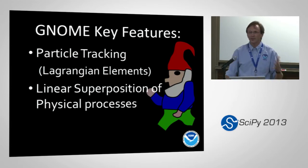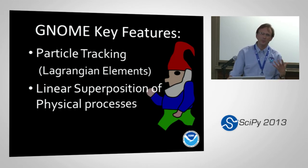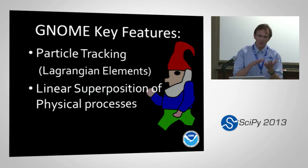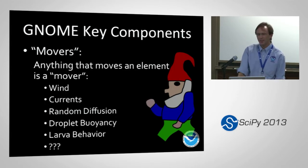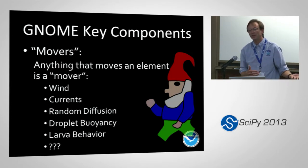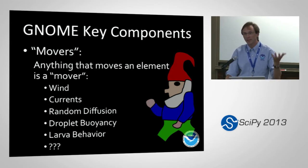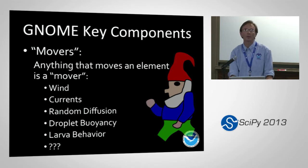The key features: it's a particle tracking model. We look at where particles — we call them Lagrangian elements — go. Essentially, we're looking at linear superposition of different physical processes: each physical process is modeled independently and added up at the end. The key pieces are what we call movers. Anything that moves a particle is a mover — wind, currents, random diffusion, droplet buoyancy moving particles vertically, or fish-larval behavior would just be another mover as far as GNOME's concerned.